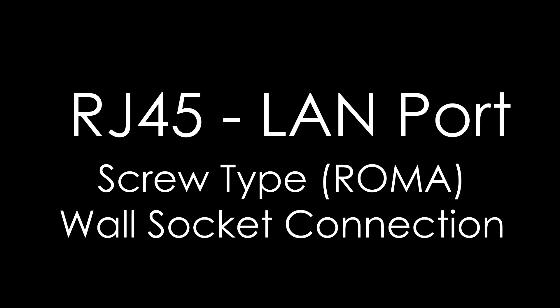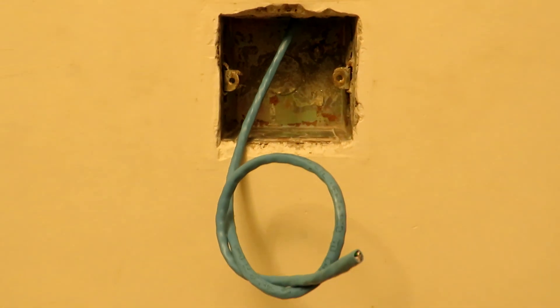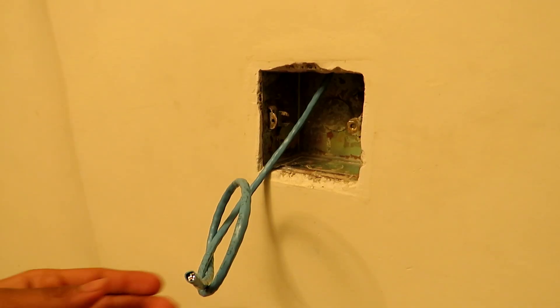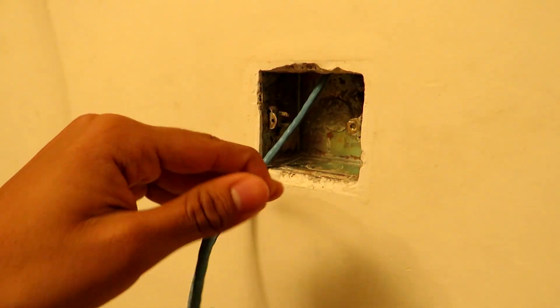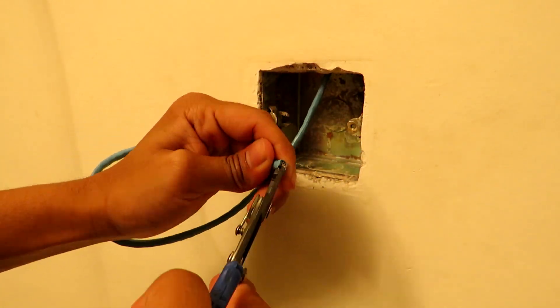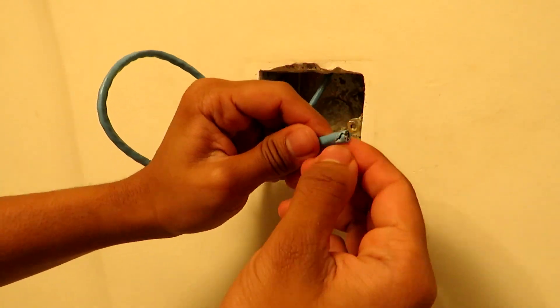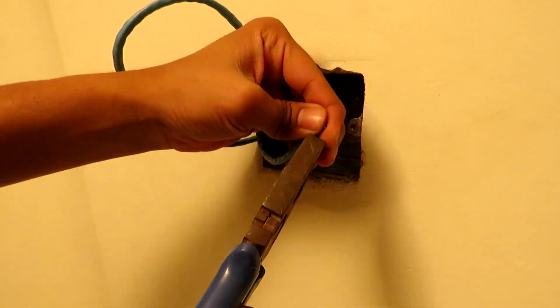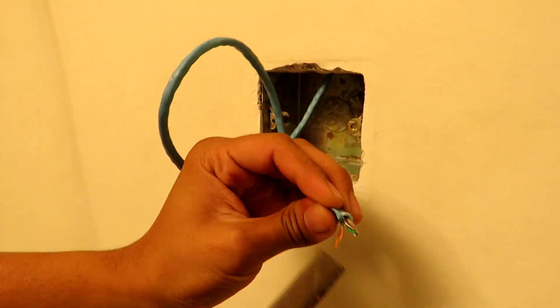In today's video I'm going to be showing you how to make the connections of an RJ45 LAN wall socket. This is manufactured by Roma and this is the screw type socket. Back in 2016 I had made this video and it was under a huge demand from the Indian audience, so I thought it could have been made better with more clarity.